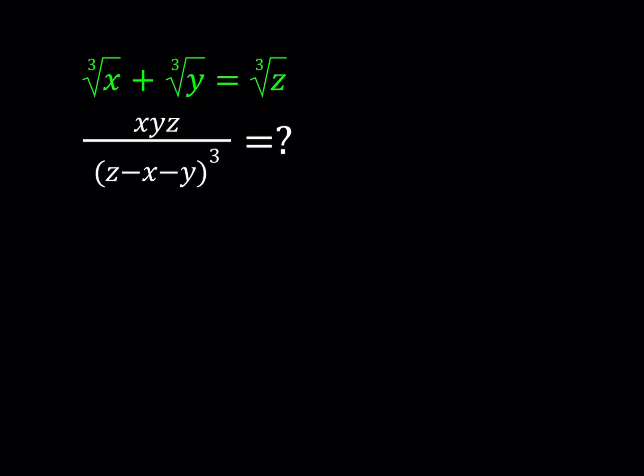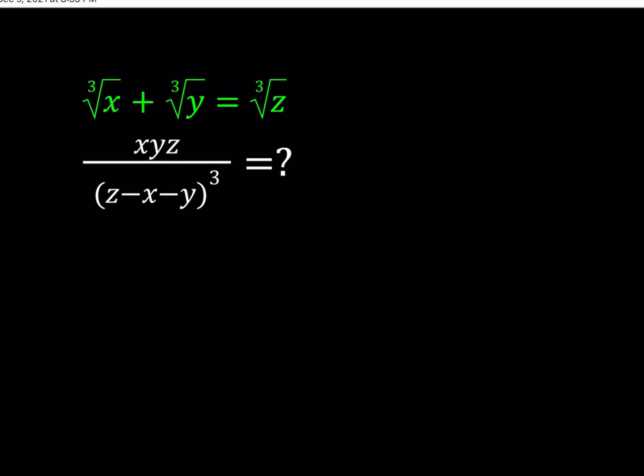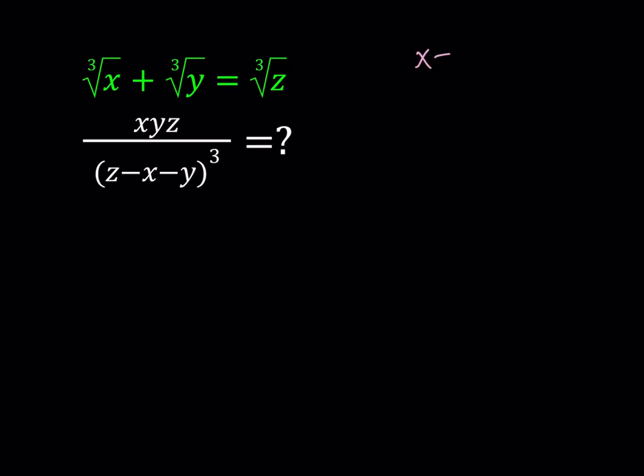First of all, notice that if you replace x, y with certain numbers, you should be getting a z value. For example, if x equals 1 and y equals 1, then you're going to get the cube root of z equals 2, which means that z is equal to 8.